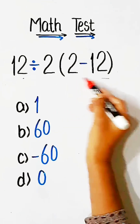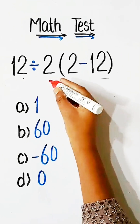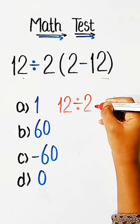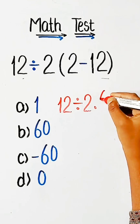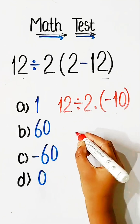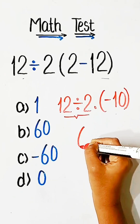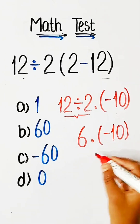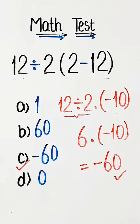Now it's time to solve this. First, we solve the bracket part: 2 minus 12 equals minus 10. Then we divide: 12 divided by 2 equals 6. Finally, 6 into minus 10 equals minus 60. So Option C is the correct answer.